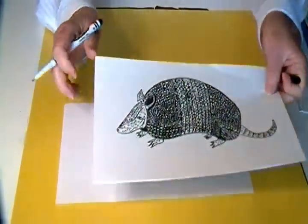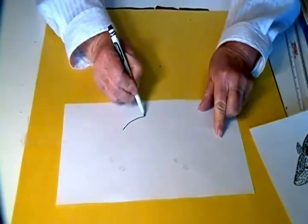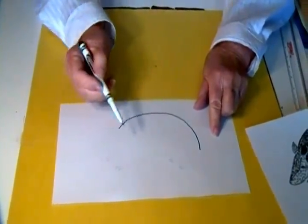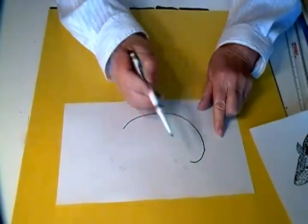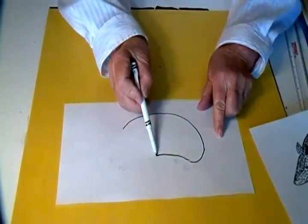To draw an armadillo we'll start with a curved shape for the back. We're going to curve on around and make a slight curve upward for the bottom.